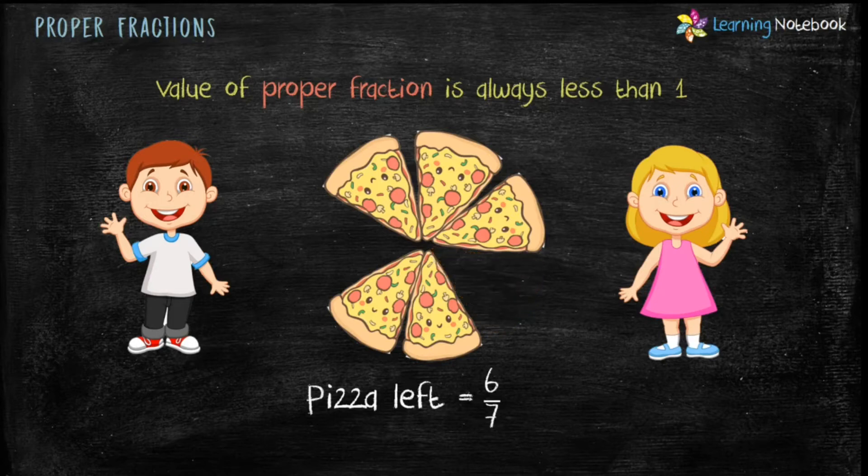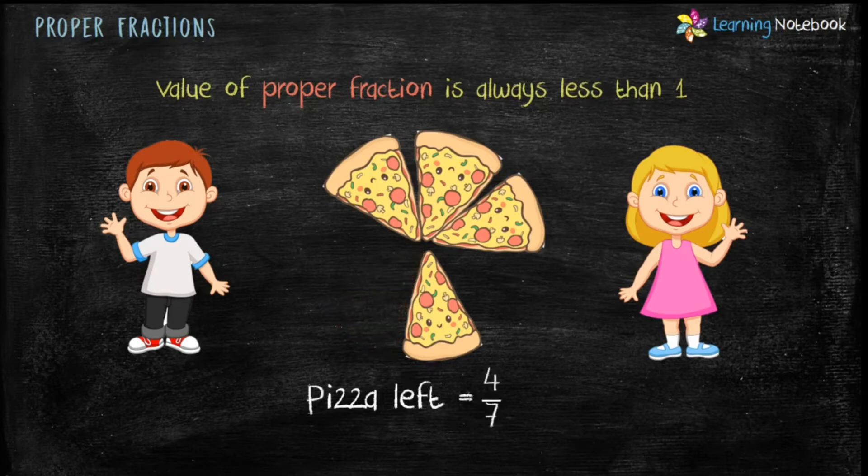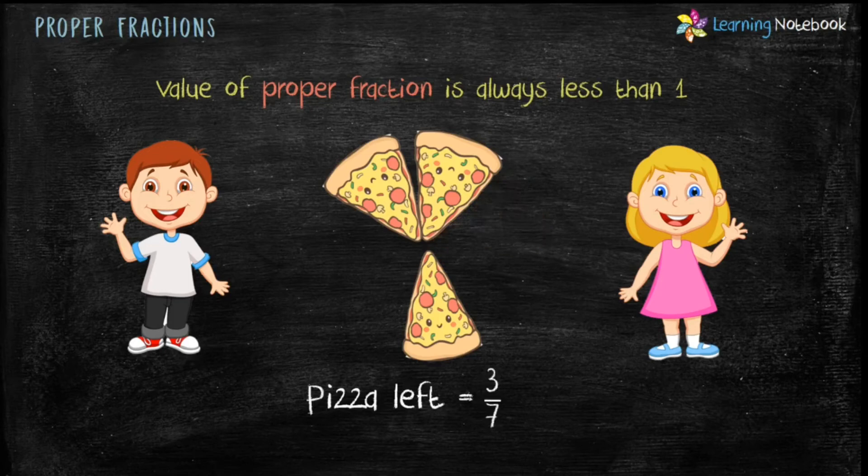Now Simran takes one slice. So pizza left is 5 by 7, which is again a proper fraction and it is less than 1.